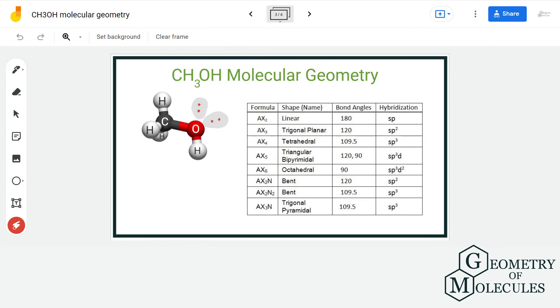Let us use AXN notation method to see if we are on the right track. We will first look at this part of the molecule. A stands for the central atom, X are the number of atoms that are forming bonds with the central atom, and N is the number of lone pair of electrons present on the central atom.